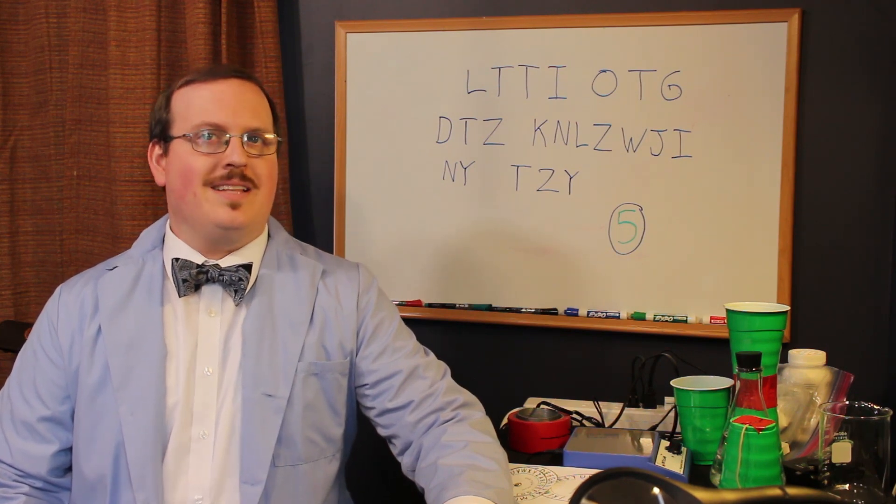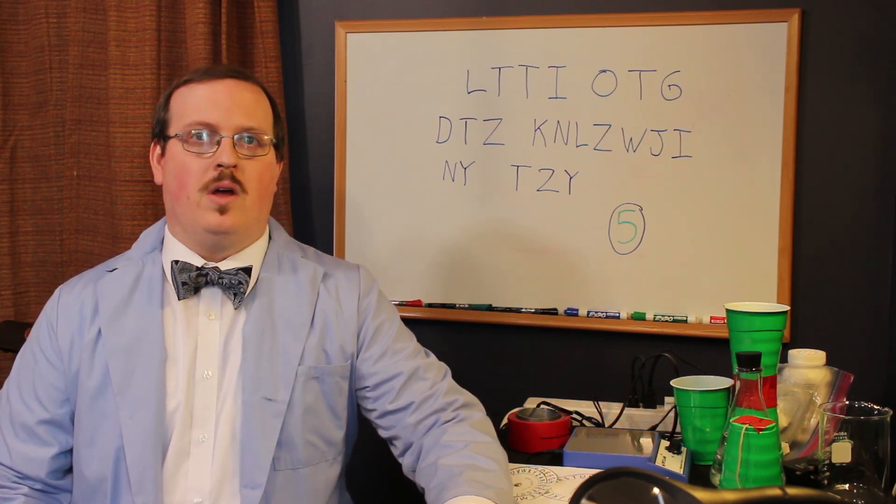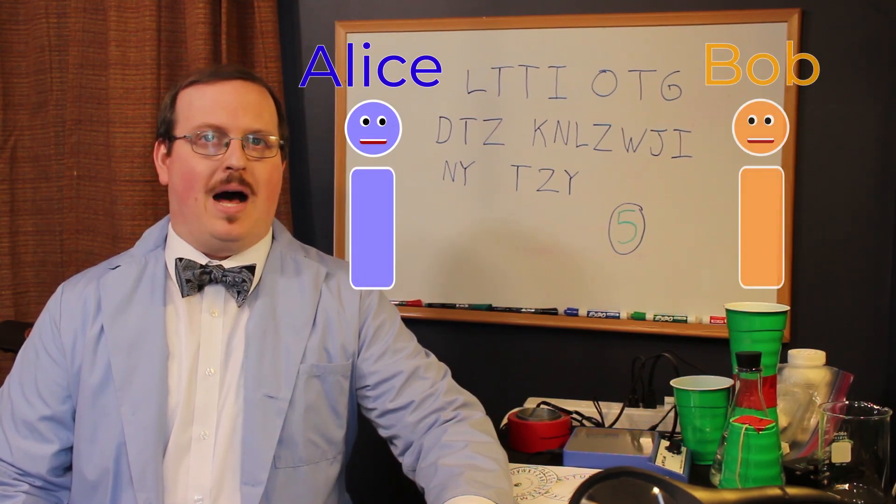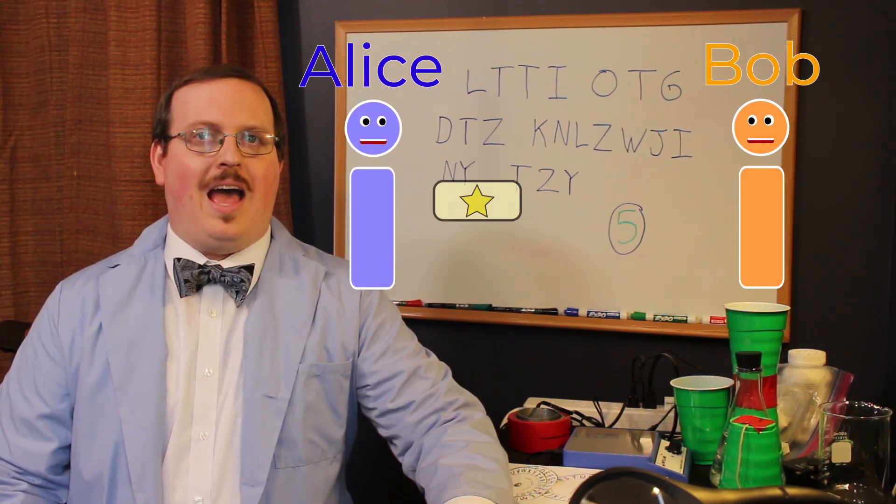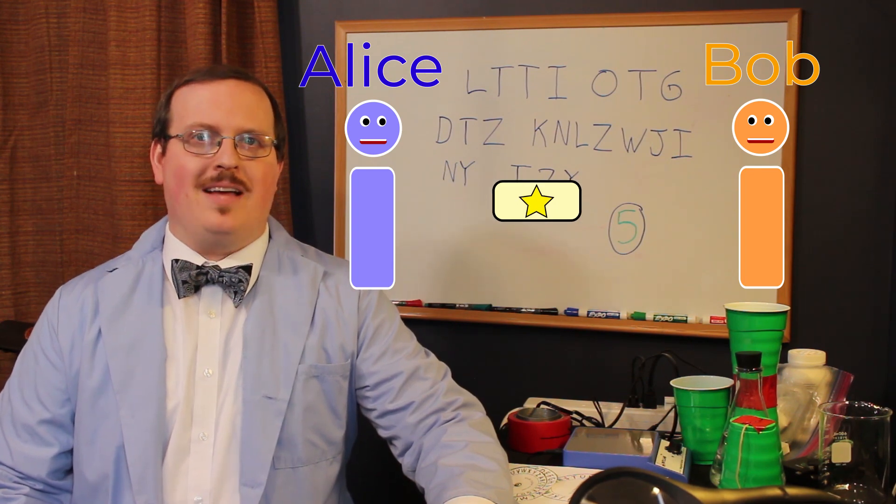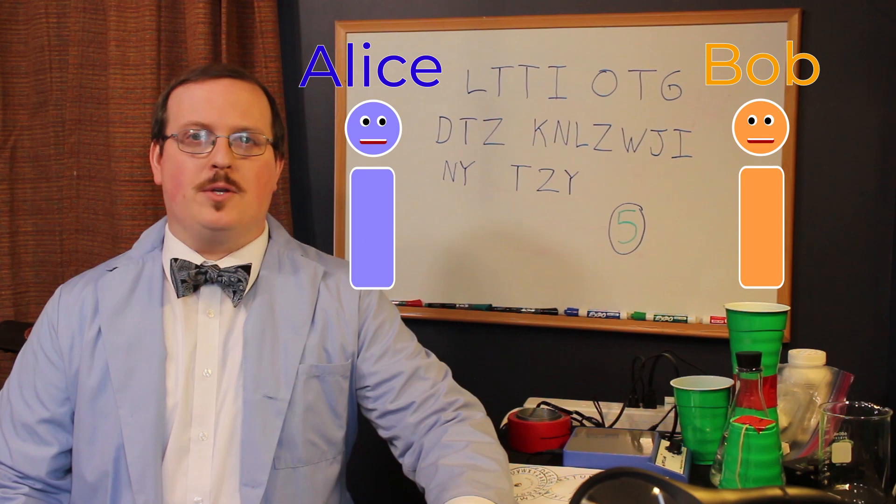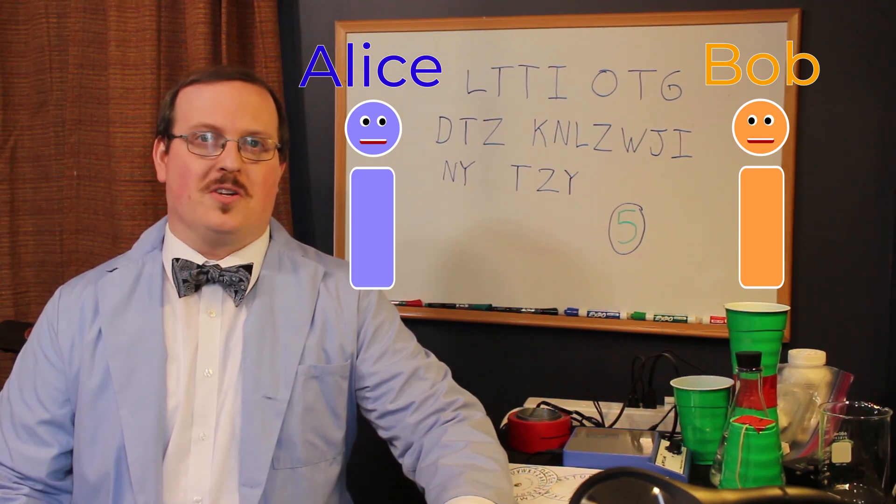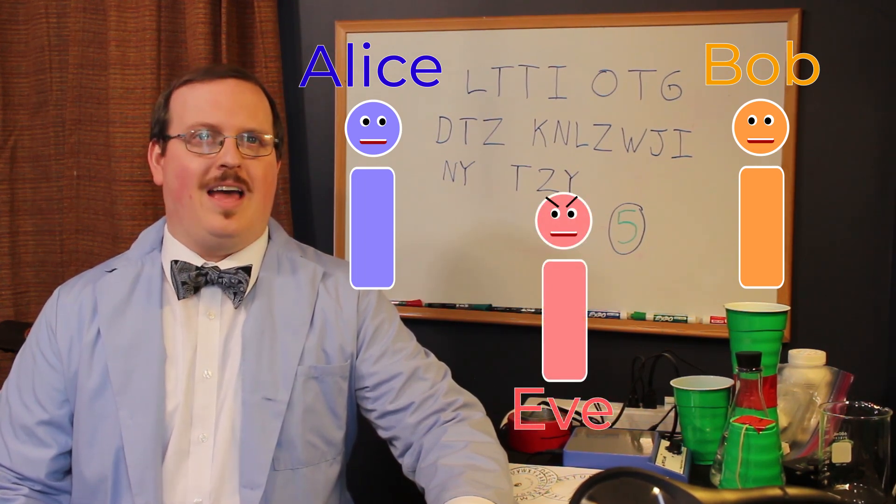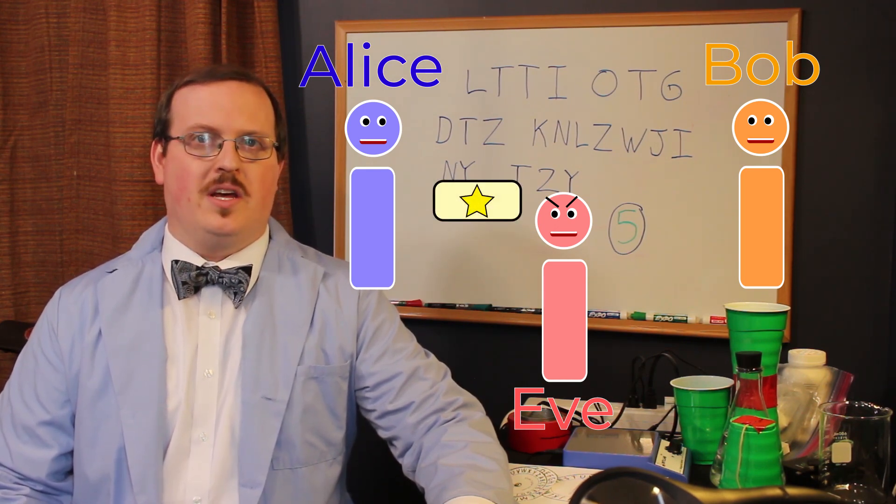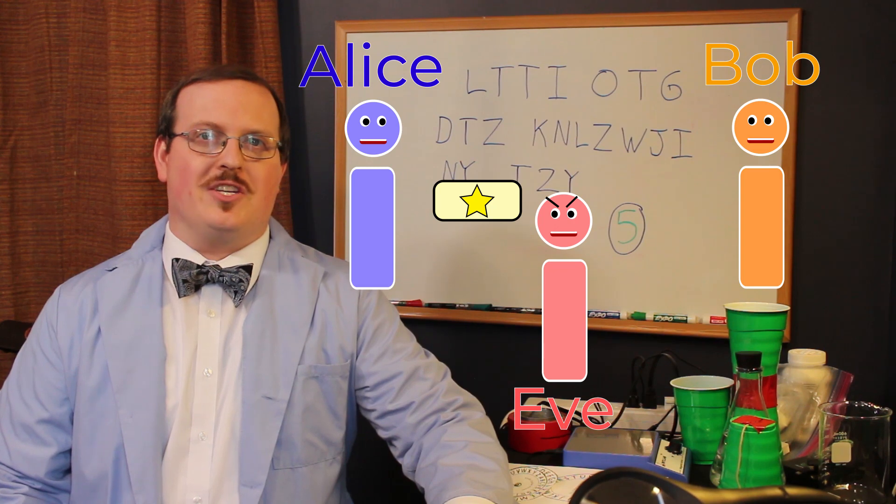Here's how scientists think about it. Let's imagine two different people, one of them we'll call Alice and the other will call Bob. Now Alice wants to send Bob a message, but Alice also knows that somewhere between her and Bob is a third person we'll call Eve.